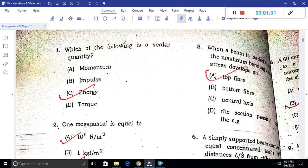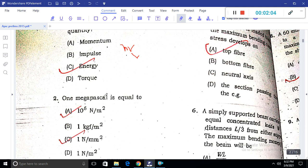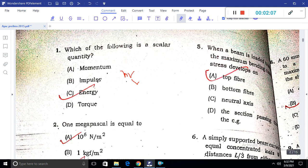We know that momentum is nothing but a vector quantity. It is not a scalar quantity. But energy is a scalar quantity. Torque is a rotational moment or turning moment, so it also has direction.